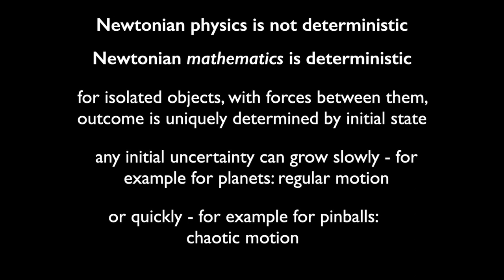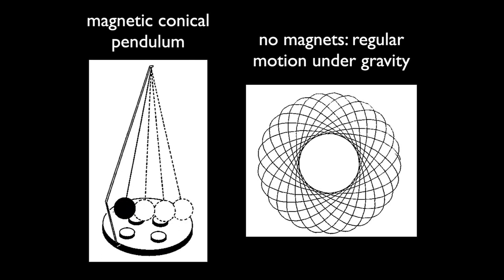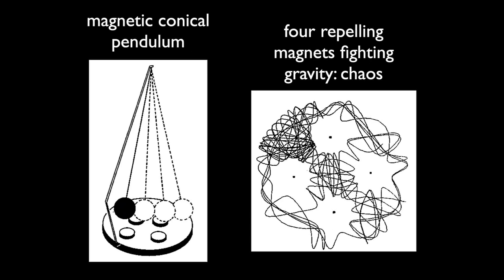Here's a little toy — a conical pendulum, which may or may not have little magnets on the bottom. If it doesn't, the motion is regular: motion under gravity, this rosette pattern. If you have magnets there repelling, the competition between their repulsion and gravity gives you chaos.